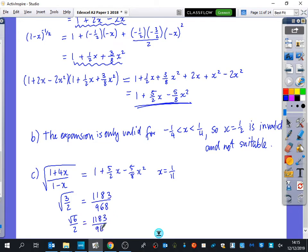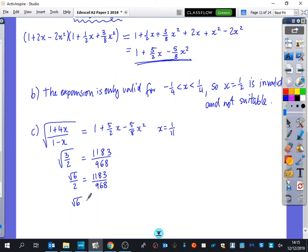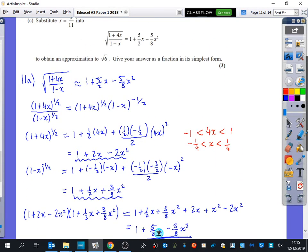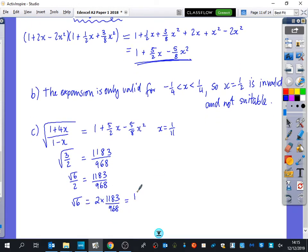So I get 1183 over 968. So if I want to get an approximation for the square root of 6, I'm going to multiply by 2. So that's 2 times 1183 over 968. And let's just double check that the question says give your answer as a fraction in its simplest form. So we get 1183 over 484. Just for interest's sake, that is 2.4442 and the square root of 6 is 2.4494. So it looks like we've got that one right because we can see how close we are to the correct answer there. So that's our final answer.